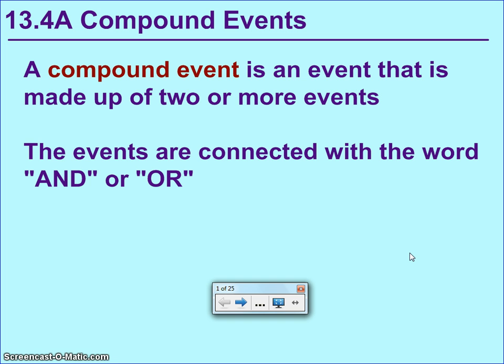We're going to start dealing with events that are made up of multiple events, so we're going to string probabilities together through the words AND or OR. As you can see on the screen, a compound event is an event that's made up of two or more events. The events are connected with the words AND or OR.